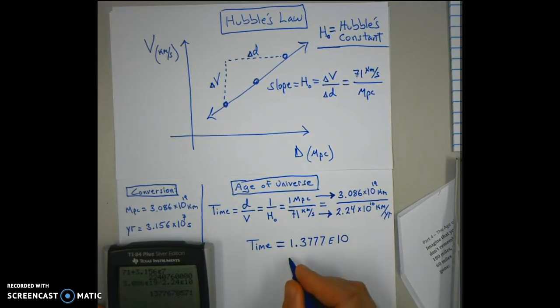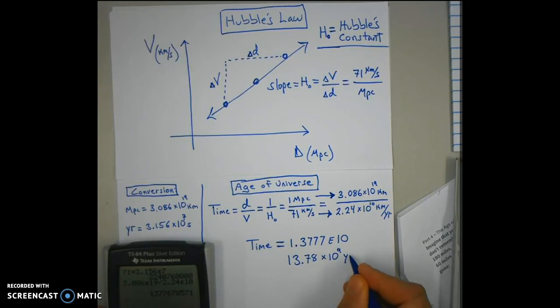E10, in other words 13.78 if I round it, times 10 to the 9th years.